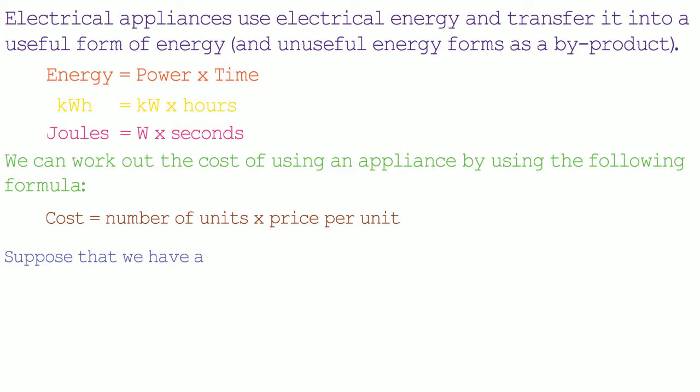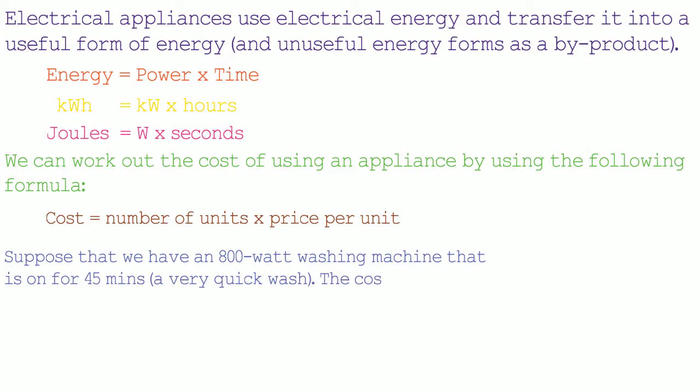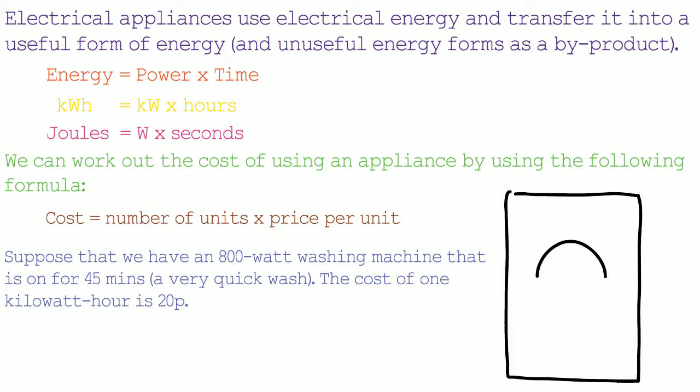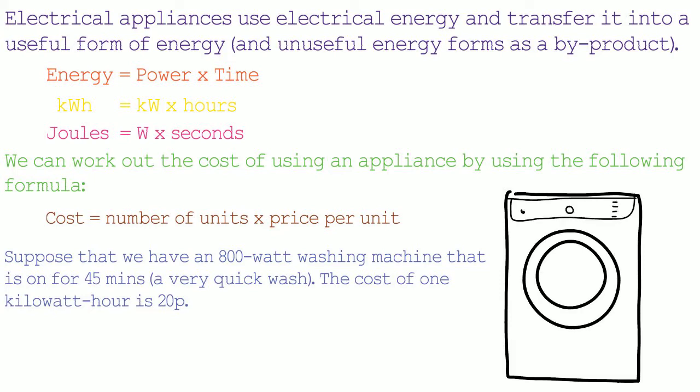Let's suppose that we have an 800 watt washing machine that is on for 45 minutes, and the cost of one kilowatt hour is 20p. To answer this we first need to find out how much energy the washing machine is using, using the formula energy equals power times time. Since the cost is given per kilowatt hour, it makes sense to convert the power into kilowatts and the time into hours.